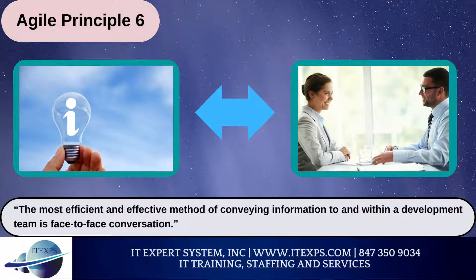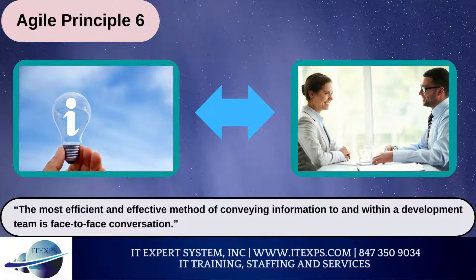Agile Principle 6: The most efficient and effective method of conveying information to and within a development team is face-to-face conversation. With so many distributed or remote development teams these days, this principle gets some critique. But at the root of it, effective communication with developers means getting conversations out of Slack and email and favoring more human interaction — even if done by video conference calls. In practice this includes: daily stand-up meetings, collaborative backlog grooming sessions, sprint planning meetings, frequent demos, and pair programming.